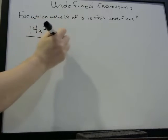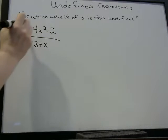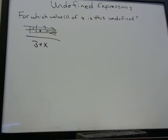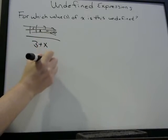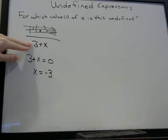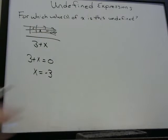Another example: (14x² − 2)/(3 + x). Don't make this more complicated than it is. When you see a question like this, forget about the numerator. If you know how to factor the numerator and cancel things, go for it — but if not, just concentrate on the denominator. When does the denominator equal zero? The answer is the same: x equals negative three. We don't care what's in the numerator.